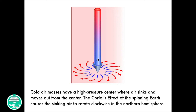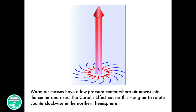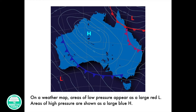Cold air masses have a high pressure center where air sinks and moves out from the center. The Coriolis effect of the spinning Earth causes sinking air to rotate clockwise in the northern hemisphere. Warm air masses have a low pressure center where air moves into the center and rises. The Coriolis effect causes the rising air to rotate counterclockwise in the northern hemisphere. On a weather map, areas of low pressure appear as a large red L, and areas of high pressure are shown as a large blue H.